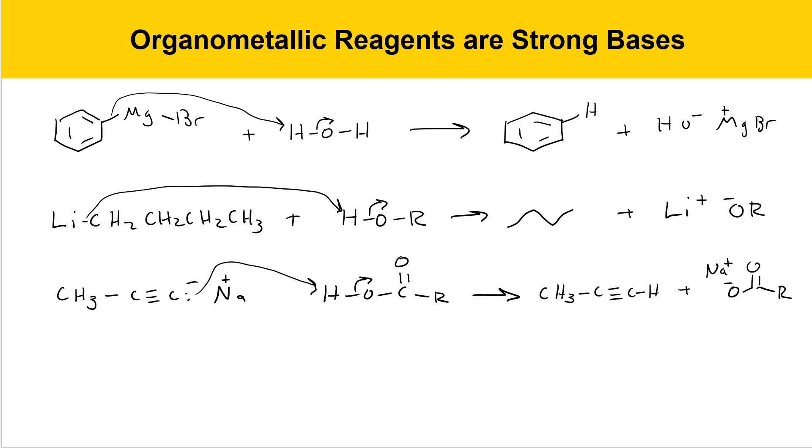These three examples illustrate how organometallic reagents like Grignard reagents, organolithiums, and acetylide ions are strong bases. This is reactivity that's important to remember, especially as we start looking ahead to the reactions of organometallic reagents with carbonyls when the organometallic reagents react as nucleophiles. It's important not to forget that they react as bases.